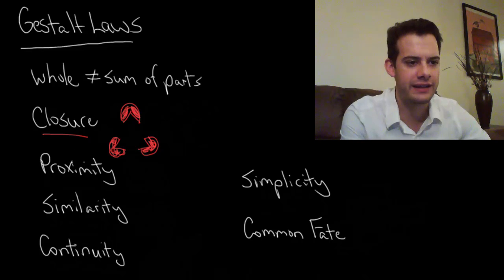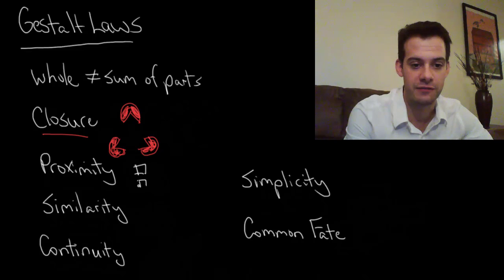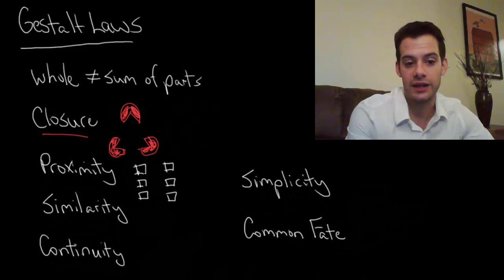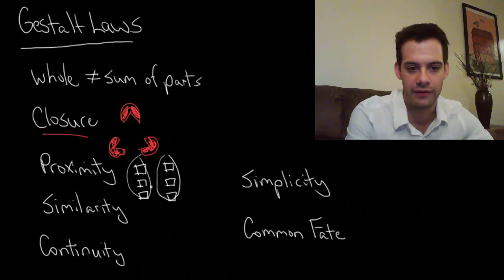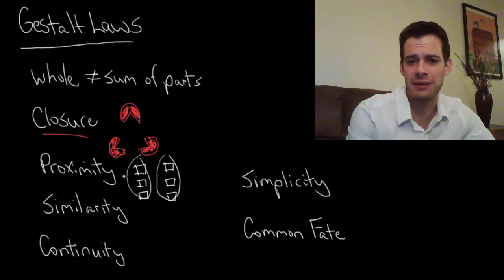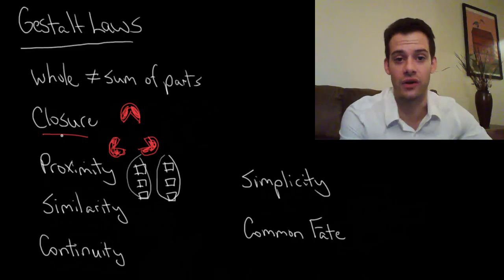Okay so next we have the idea of proximity. The idea of proximity is that when things are near each other we tend to perceive them as being a group. So if I drew a bunch of boxes here, if you were going to perceive groups here you'd probably choose based on how close the boxes were to each other. In other words you'd see this as a group here and this as a group here. You wouldn't say this one is a group with this one and this one goes with that one. I mean you could do that but it doesn't really make sense. You'd probably prefer to rely on this idea of proximity.